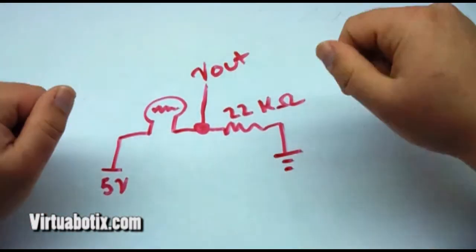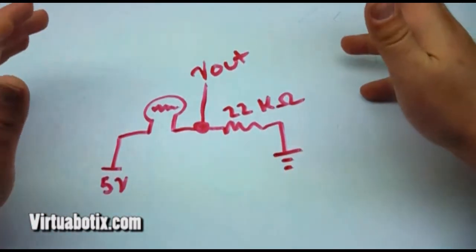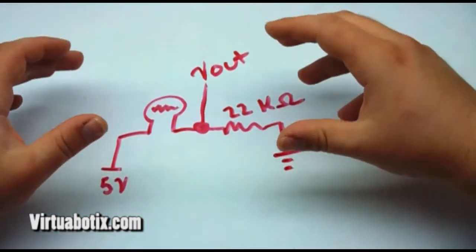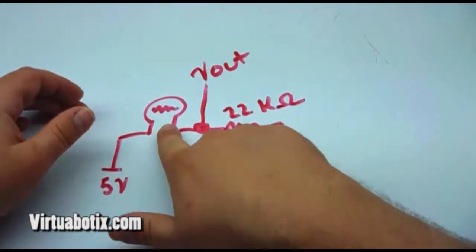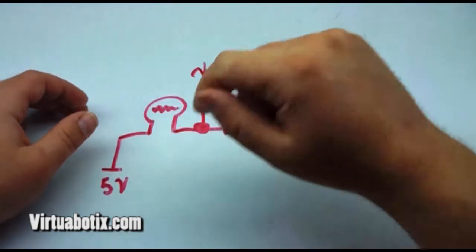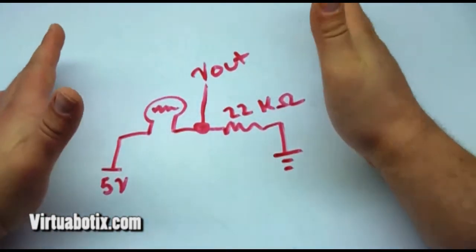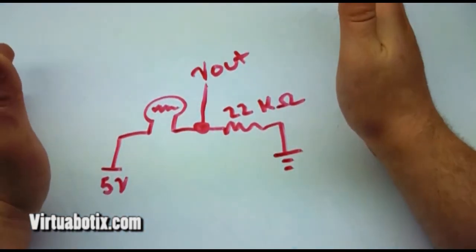Right here we have a diagram that I've already drawn out that represents the circuit that we're going to be creating to measure the pressure on our pressure sensor, which is this right here, to our Versalino Uno in this case.